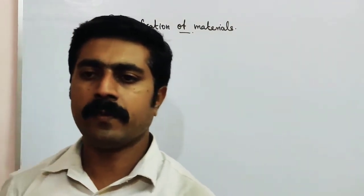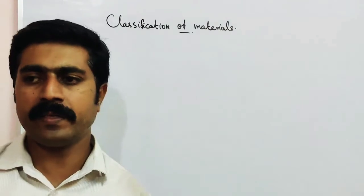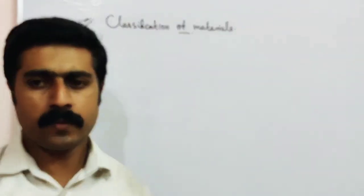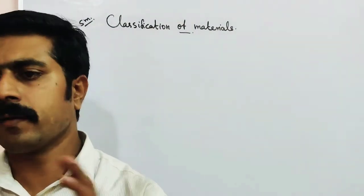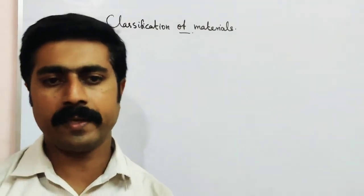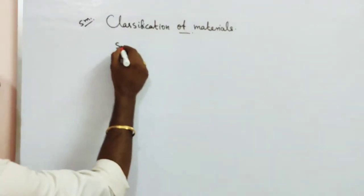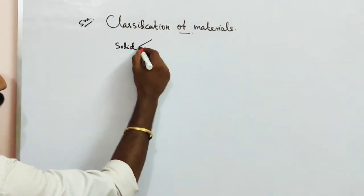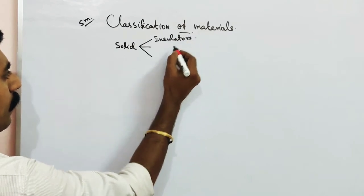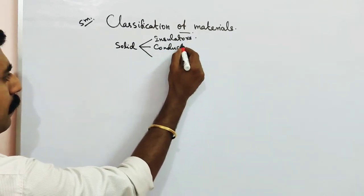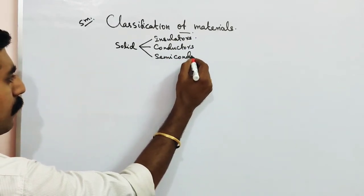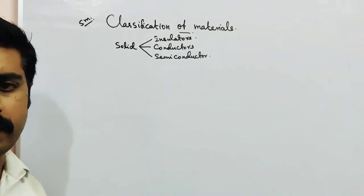Hi students, today we are going to discuss the topic classification of materials. This is an important 5-mark question. In this lesson we will talk about solids — we will talk about semiconductors and their applications. Solids can be classified into three types: insulators, conductors, and semiconductors, based on the energy band diagram.